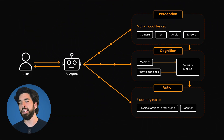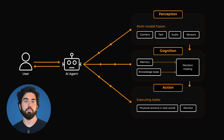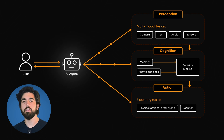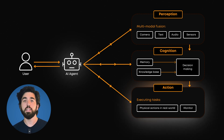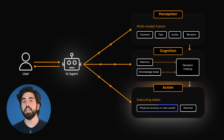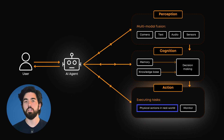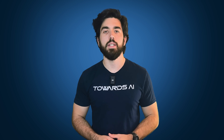So what is agentic AI? It's more than just a chatbot. It's about AI that doesn't just respond to you, but can actually take action and make decisions to complete tasks without human intervention. I'll give you some concrete examples of this in just a minute.